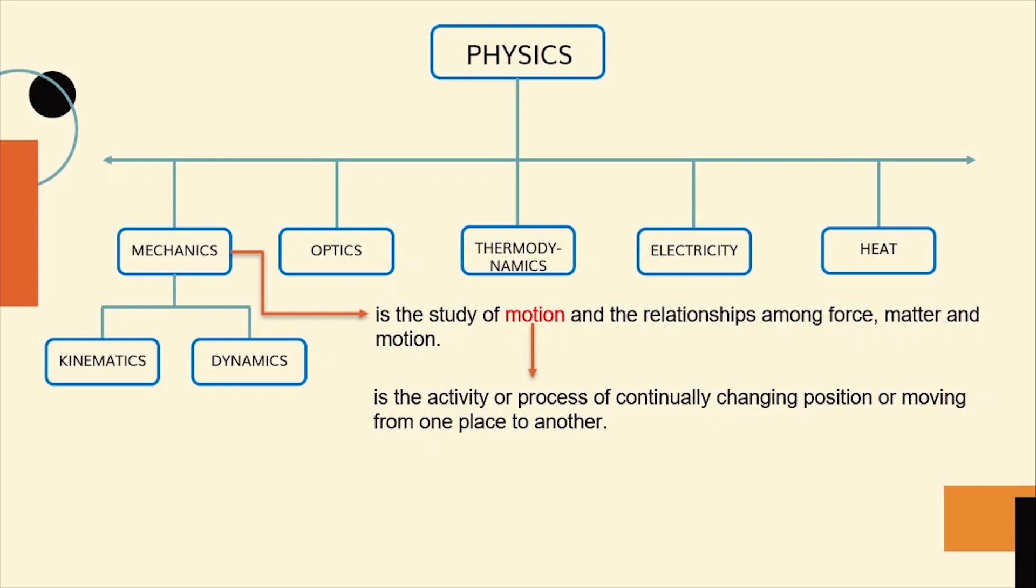Let us now compare kinematics from dynamics. Kinematics describes motion without regard to its causes. It explains or describes the motion of an object which tells us how fast or how slow an object moves. Some of the quantities under kinematics are speed, velocity, acceleration, distance and displacement.